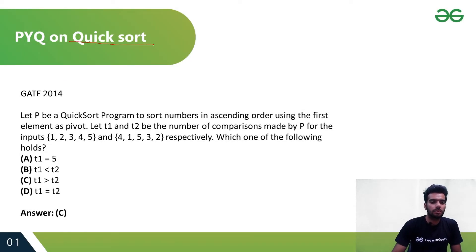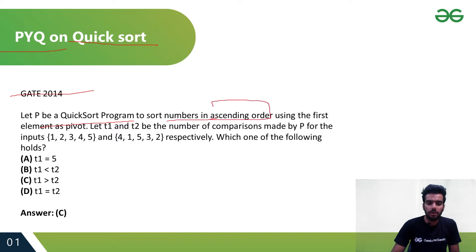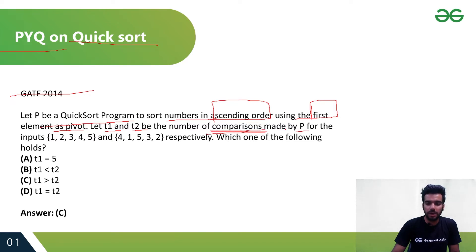Now let's see some questions on quicksort that are previous year GATE questions. This is a GATE 2014 question. Let P be a quicksort program to sort numbers in ascending order using the first element as pivot. Let t1 and t2 be the number of comparisons made by P for the inputs 1,2,3,4,5 and 4,1,5,3,2 respectively. Which one of the following holds?